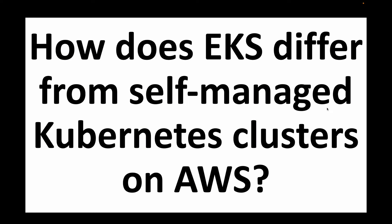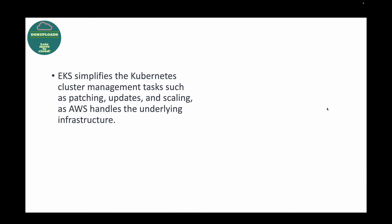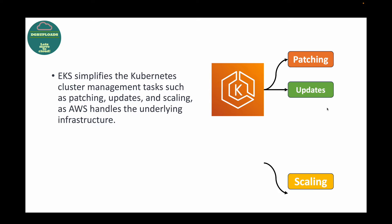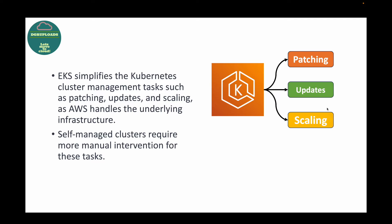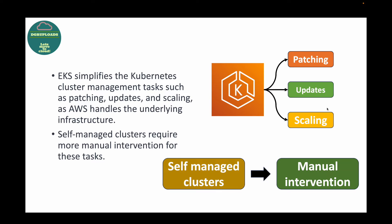The next question is: how does EKS differ from self-managed Kubernetes clusters on AWS? EKS simplifies cluster management tasks such as patching, applying updates, and scaling — all of these are handled by AWS. For example, when you want to upgrade to a new version of Kubernetes, AWS provides that update and you can perform it through the management console. With self-managed clusters, you have to do all of this manually, which is why EKS is recommended over self-managed clusters.